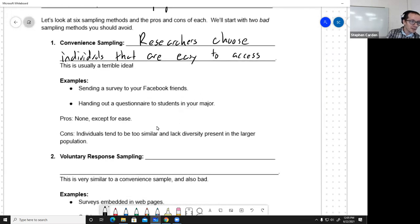The pros and cons: there are no pros except that it's easy to do, and that is almost never a good enough reason to use this. What's bad about it? If people are connected with you on social media, you've got something in common. That whole group of people is going to be kind of similar. Are you going to get the diversity that is going to be present in a larger population? Probably not.